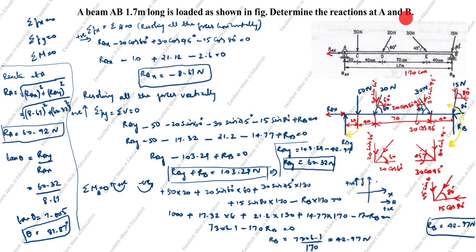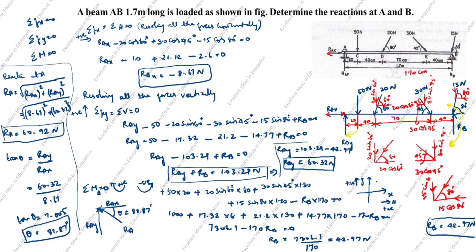In this problem, we needed to find reactions at A and B. We found RB = 42.97 N, RAY = 60.32 N, RAX = 8.61 N (acting toward left), and the resultant RA = 60.92 N at an angle θ = 81.87°. Thanks for watching this video.